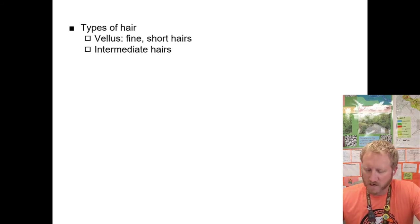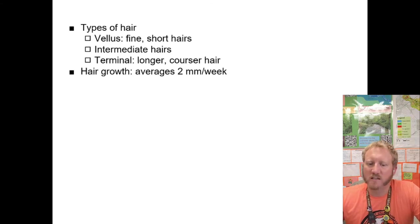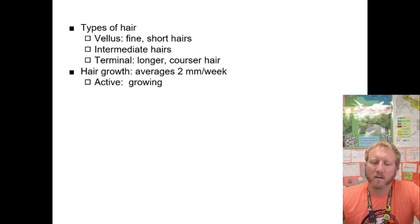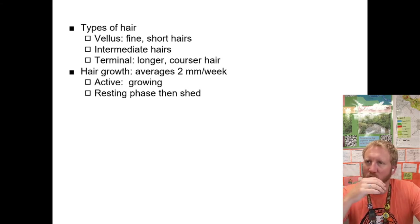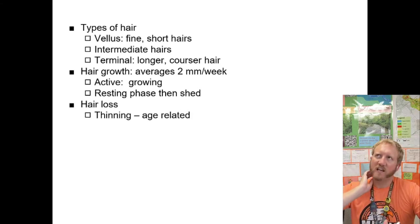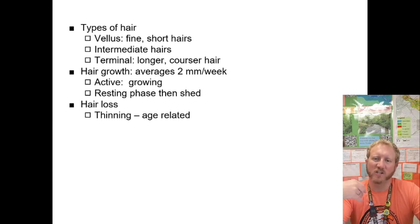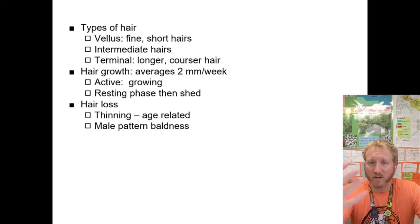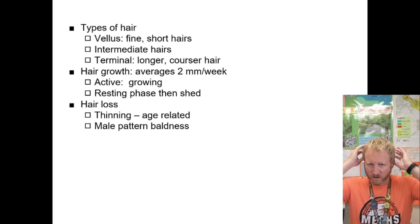Hair types include vellus (very fine or short), intermediate, and terminal hairs, which are longer and coarser — like hair on your head. Hair grows about two millimeters per week during active growth, then enters a resting phase where growth stops, hair is shed, and the process starts again. Hair loss is typically age-related — you stop replacing shed hair. In males, male pattern baldness is most common, with thinning and a receding hairline.